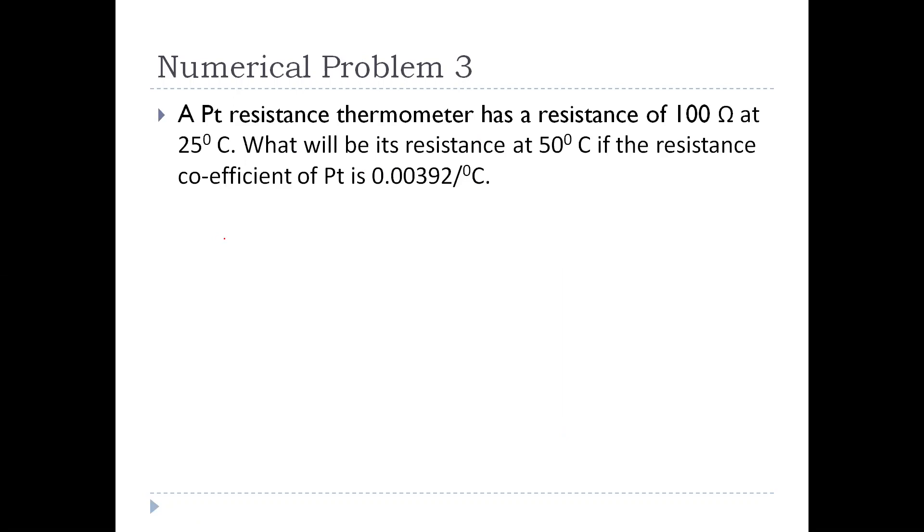For RTD, we have only one formula: RT is equal to R0 into 1 plus alpha into delta T. R0 is the known resistance, RT is the unknown resistance, alpha is the resistance coefficient and delta T is the change in temperature. Here the known resistance is 100 ohms at 25 degree Celsius. We have to find R50, the resistance at 50 degree Celsius. Delta T is 50 degree Celsius minus 25 degree Celsius, which equals 25.